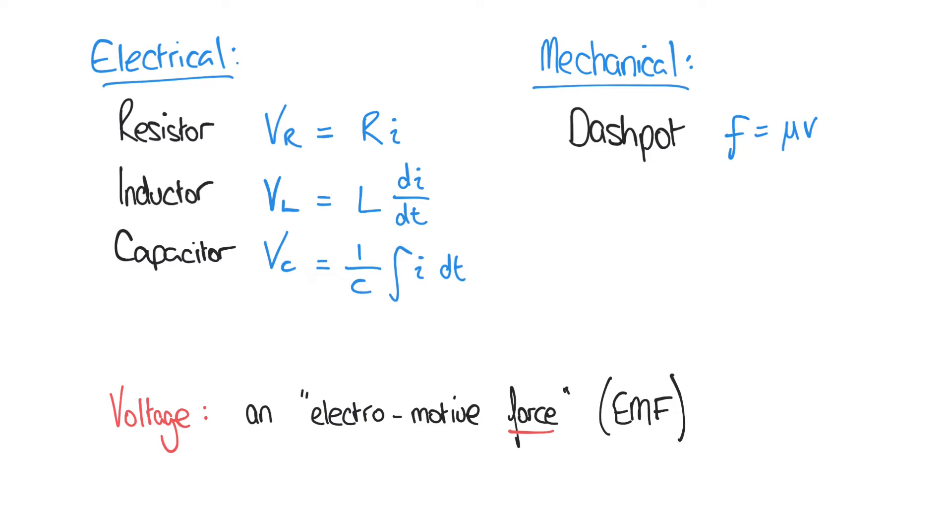In both cases too, we have an impedance. This is the resistor for the electrical. It impedes current. And we have a physical impedance, mu, for the mechanical.